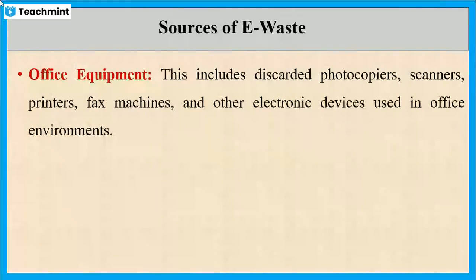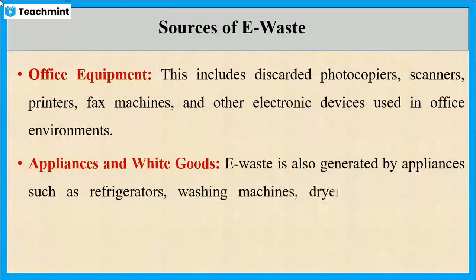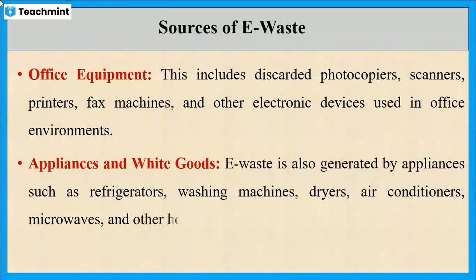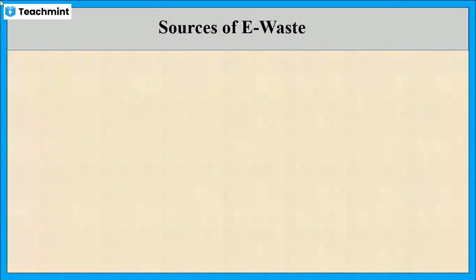This creates large amounts of e-waste. The next one is appliances and white goods. Household appliances make up a large portion of e-waste. Refrigerators, washing machines, air conditioners, dishwashers, vacuum cleaners, and microwaves are all examples of appliances that can accidentally end up in the dumpster. The next one is lighting equipment.